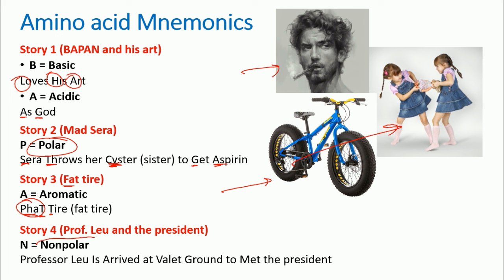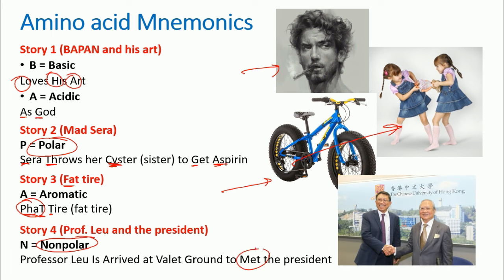The last story is about the non-polar amino acids: 'Professor Liu is arrived at valet ground to meet the president.' I modified the pronunciation in a few portions so that it fits with the naming of amino acids, although all of them are homophonic in sound. Starting with capital P: capital P is Proline, capital L-U is Leucine, capital I is Isoleucine, capital A is Alanine.